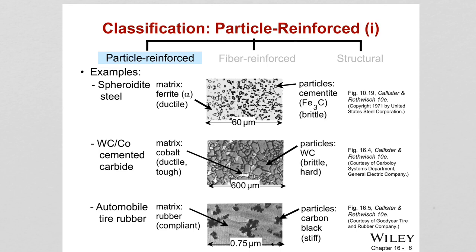Particle reinforced composites are multiphase materials. An example is pearlitic steel, where ferrite (alpha) is soft and ductile, and cementite is hard and brittle. Pearlite achieves high ductility and strength due to the presence of both phases. Similarly, spheroidite steel has a ferrite matrix that is ductile, with cementite particles that are brittle, providing both ductility and hardness — strength and ductility at the same time.